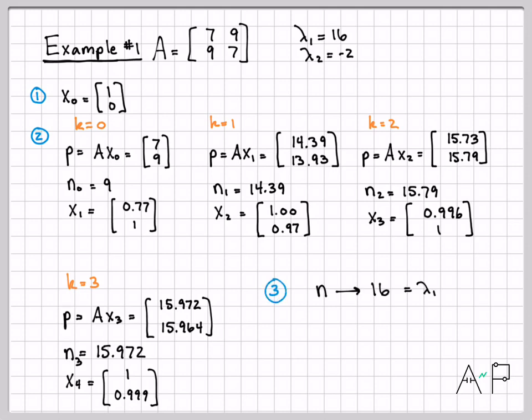Let's draw our conclusion. The sequence of n's as k gets large is going to 16, which is indeed the largest eigenvalue. And the entries of x are getting closer and closer to [1, 1], so it looks like the eigenvector associated with the largest eigenvalue is the vector [1, 1].